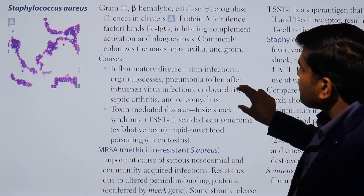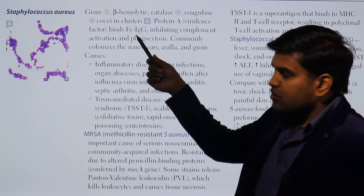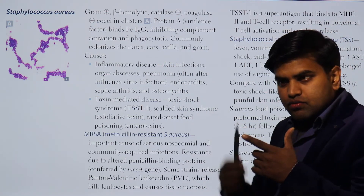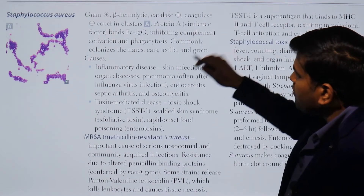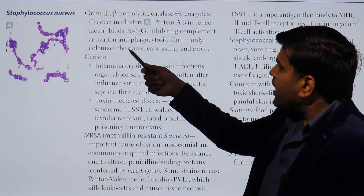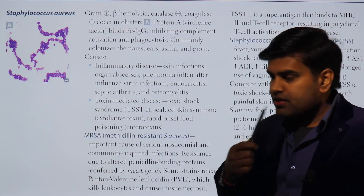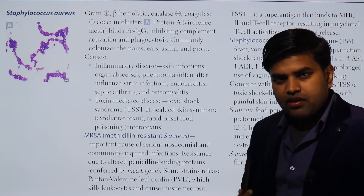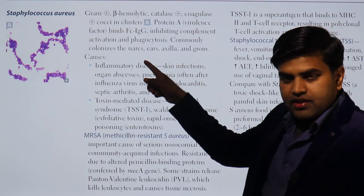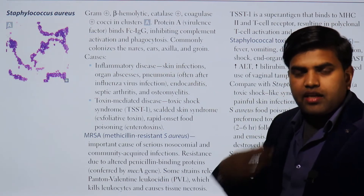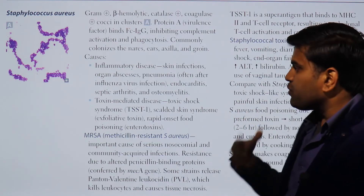S. aureus contains Protein A, which binds to the Fc portion of immunoglobulin G - the downward portion of the Y-shaped antibody is called the Fc portion and the upward portion is the Fab portion. Binding at Fc inhibits complement activation and phagocytosis. S. aureus normally colonizes the nares, ears, axilla, and groin as normal flora, but can be transmitted to others and cause infection in the host as well.